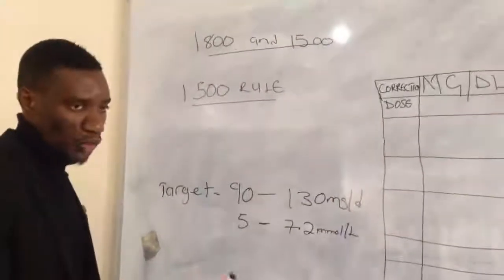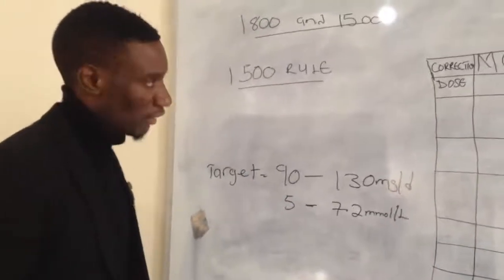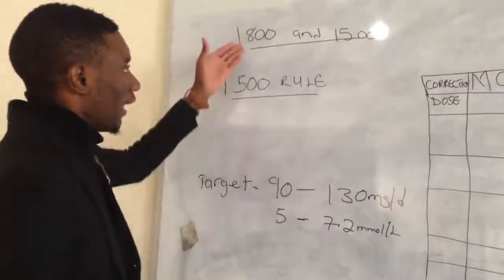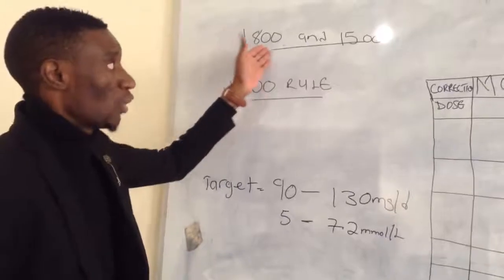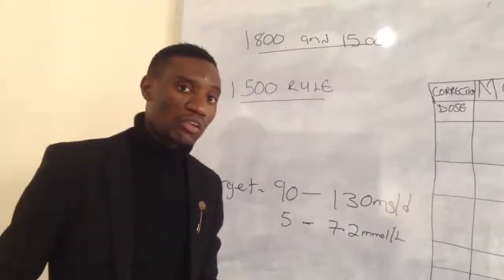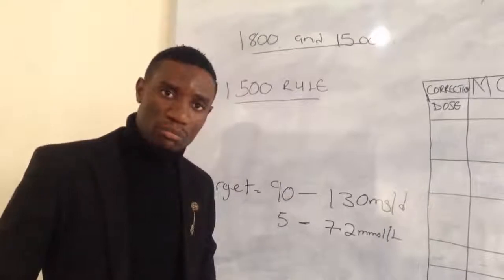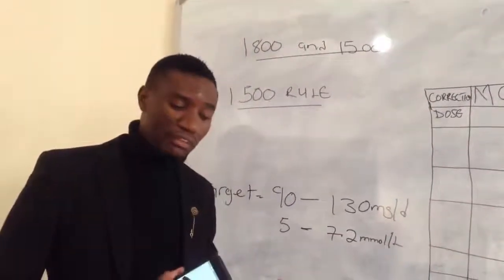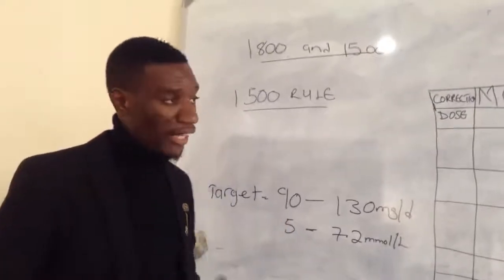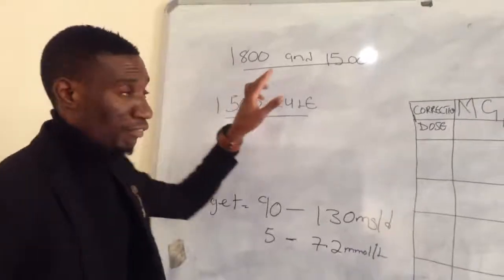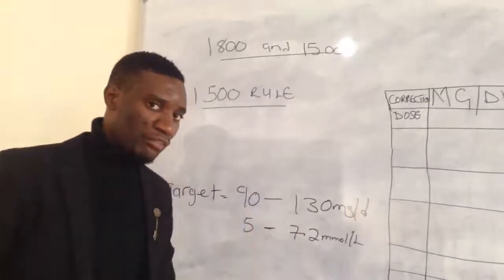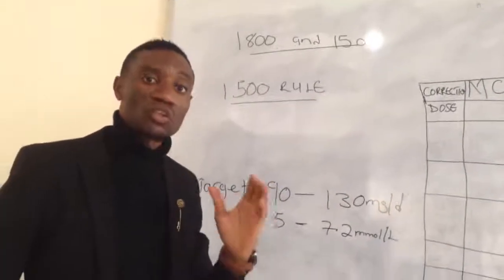This is the individualized insulin sliding scale. Last time I said that with this sliding scale you can use two rules. The first is the 1800 rule, which is the most common, and the second is the 1500 rule. The 1800 rule works best for rapid-acting insulins, while the 1500 rule applies to short-acting insulins.